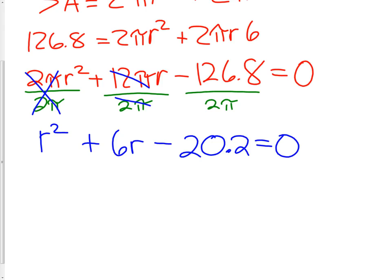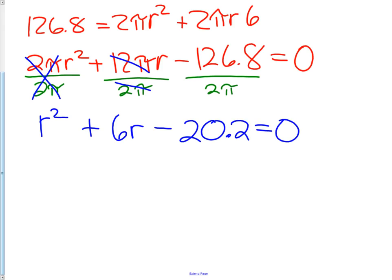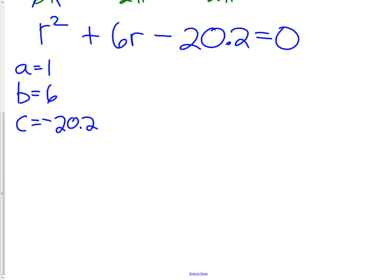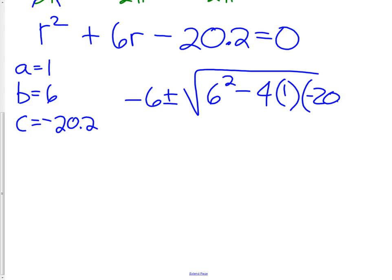Now it's time for the quadratic formula. My a value will be 1. My b value will be 6. And my c value will be -20.2. We're just going to write that down into the quadratic formula. We have -b ± √(b² - 4ac) all over 2 times the a value.